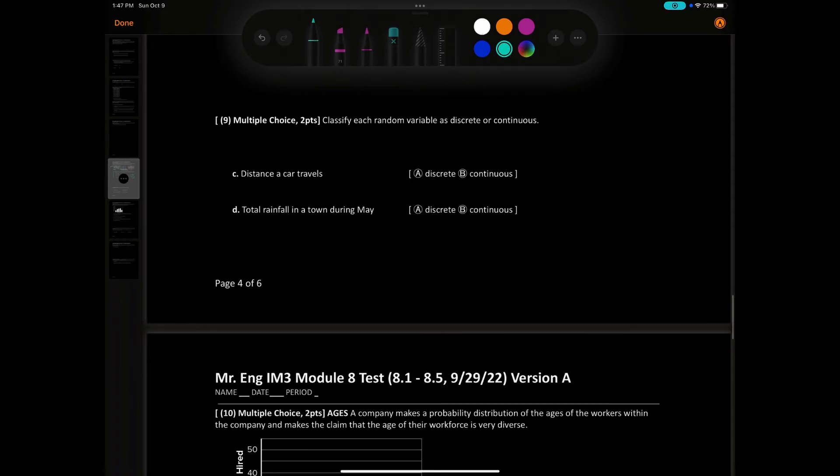Number 9, classify each random variable as discrete or continuous. Discrete means count, continuous means it could be a fraction or a decimal. Distance a car travels, say 102.6 miles, that would be continuous. Total rainfall, let's say 4.2 inches, that would also be continuous.